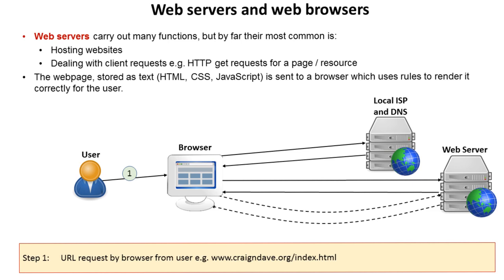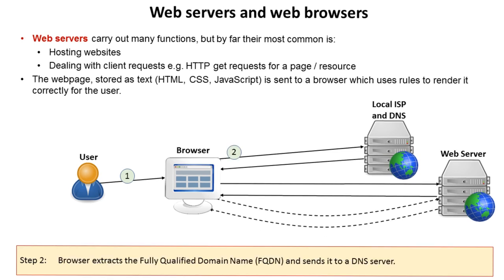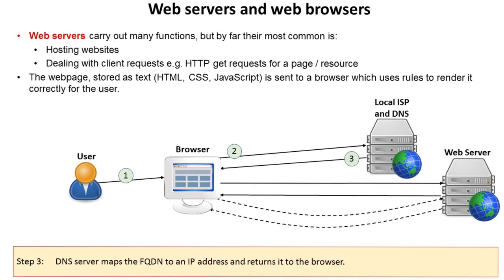They're then sent to a browser which uses rules to render and draw the web page appropriately. So let's step through how this works. We start with the user who has typed a URL into a browser — in this example, craiganddave.org/index.html. The browser first extracts what is known as the fully qualified domain name, www.craiganddave.org, and sends it to a local DNS server.